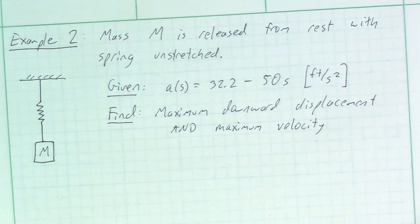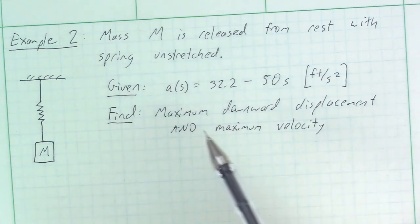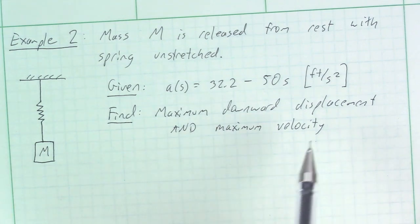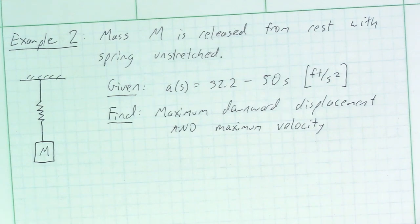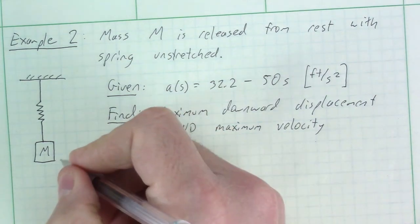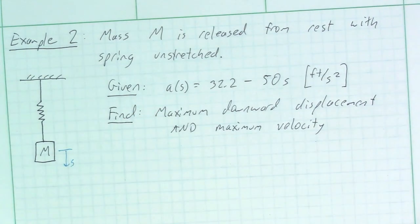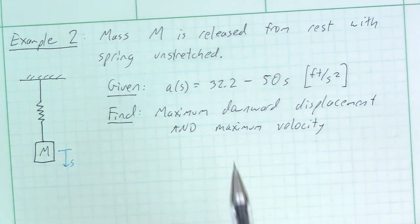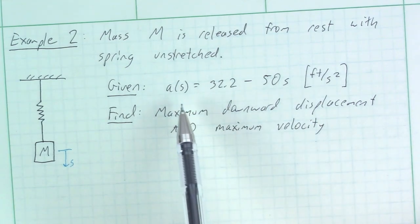In this second example, we have two more examples of applying particle kinematics theory. Here we're specifying acceleration as a function of position — recognizing that type of problem — and working through to get displacement and velocity. The system is a mass connected to a spring, where the zero point is the equilibrium position where the spring isn't deformed and provides no force. We're in US customary units, so accelerations are specified accordingly.